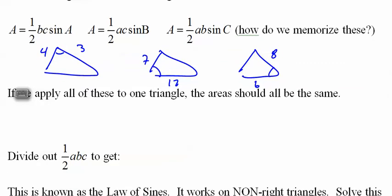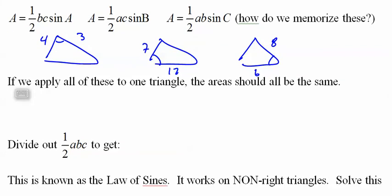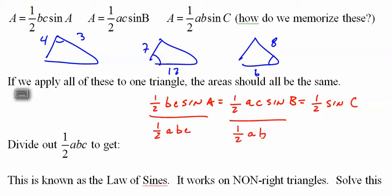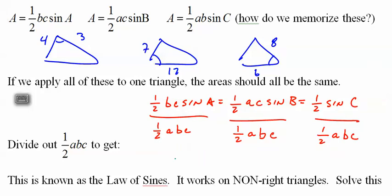Now imagine any triangle with angles A, B, C and opposite sides a, b, c. Because the triangle has the same area regardless of how we calculate it, all the area expressions are equal. Dividing out the common factors gives us the Law of Sines: sine A over little a equals sine B over little b — and sine C over little c will be the same ratio too.